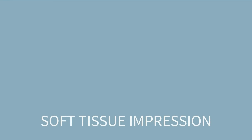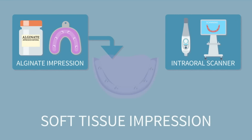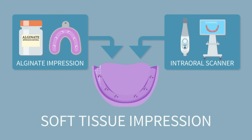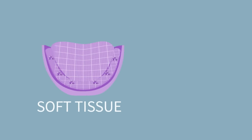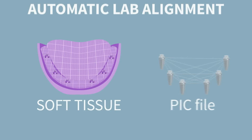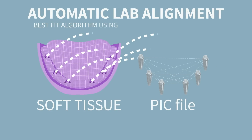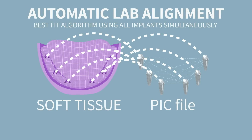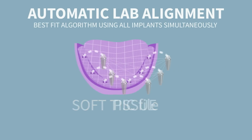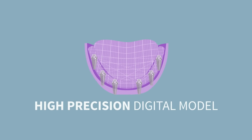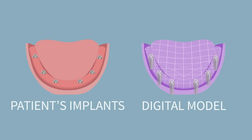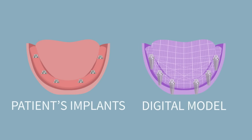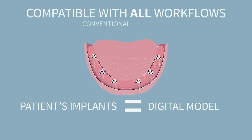Soft tissue registration must be taken with an alginate impression or an intra-oral scanner. At the lab, the PIC file and soft tissue data are easily aligned, becoming a high-precision digital model identical to the patient's mouth. Now you are ready to continue your digital or conventional workflow.